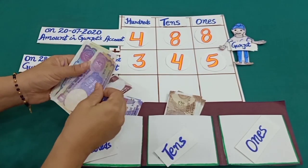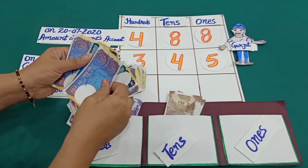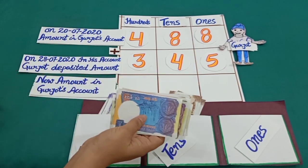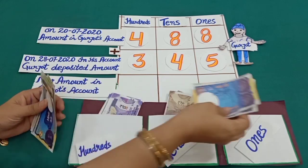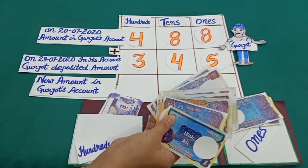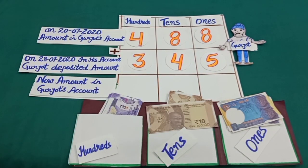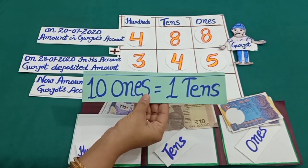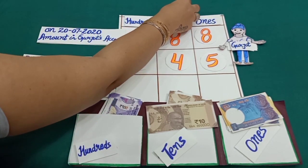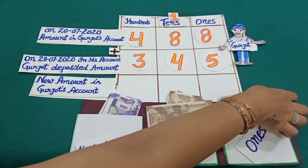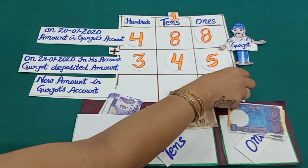Counting the one-rupee notes: 1, 2, 3, 4, 5, 6, 7, 8, 9, 10, 11, 12, 13 — and 13 rupees is equal to 13 ones. Now Gurjot will take 1 note of rupees 10 in place of 10 notes of rupees 1, because 10 ones is equal to 1 ten. So 1 at the tens place, and we have 3 notes of rupees 1, meaning 3 at the ones place.